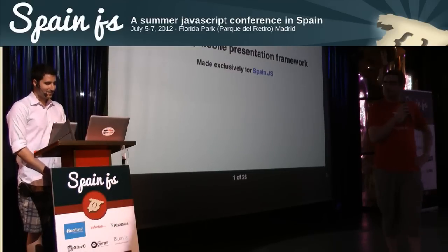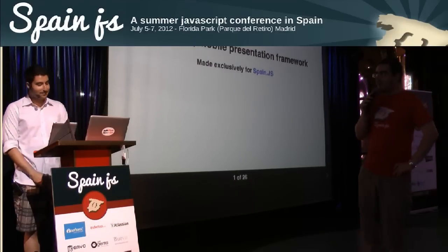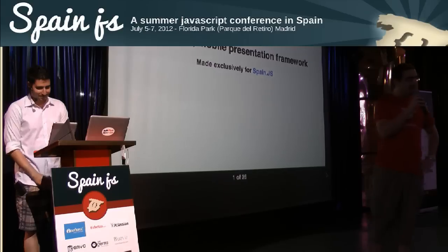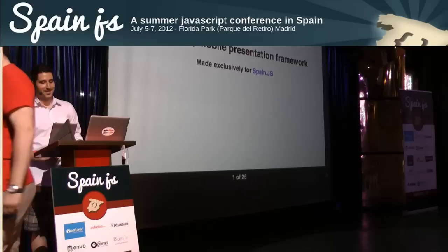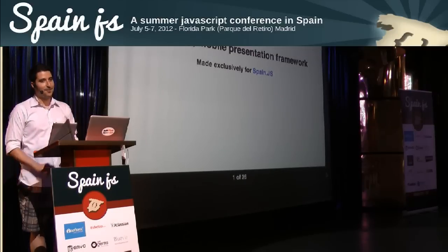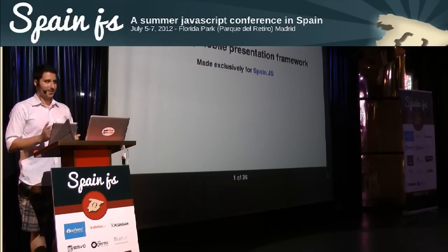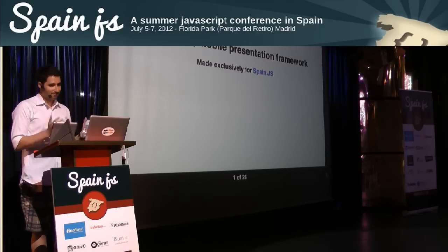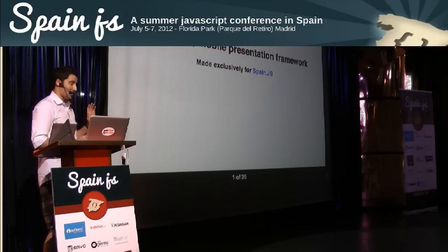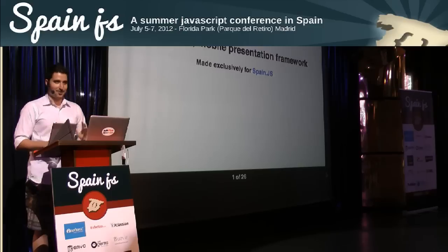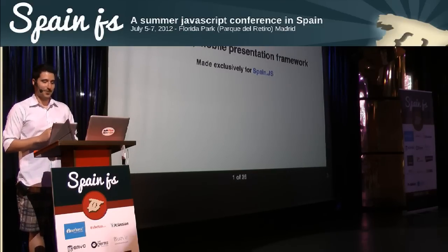Our next speaker is Jonathan Azoff. He's going to talk about jQuery Mobile, how to build scalable and maintainable applications. My name is Jonathan Azoff. I'm from San Francisco, California. I guess you could say I'm somewhat of a JavaScript hobbyist. I work as an application engineer, but I do JavaScript for fun — a lot of open source stuff, specifically when it has to do with jQuery. I think jQuery is really fun to work in.